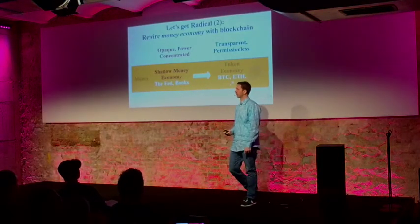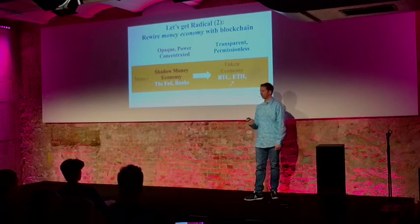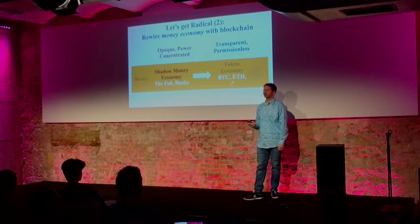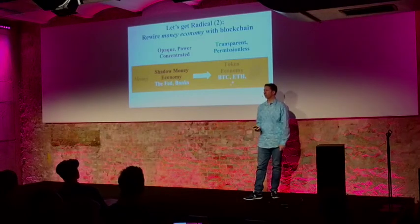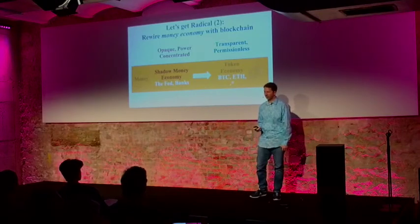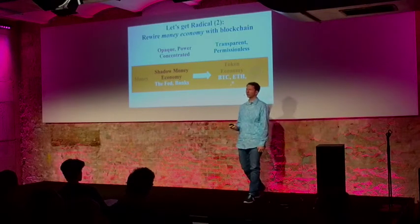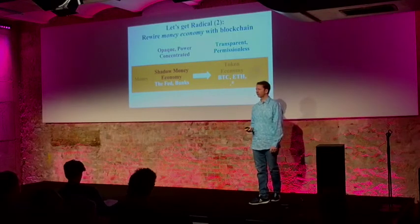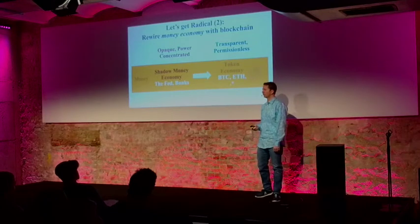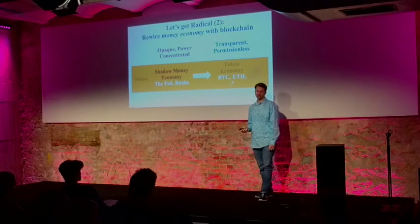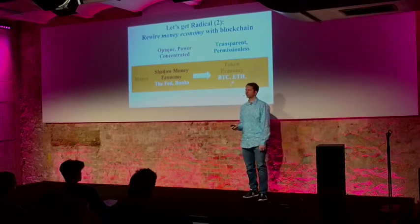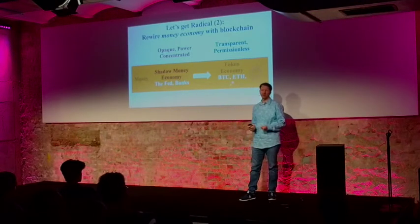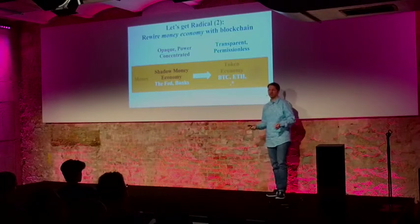Here's one cool example playing out over the last ten years. It was sparked in 2008 with the financial crisis — building up for years and years — really this shadow money economy where you had the Fed, the banks, and people creating policies that prey on the weak. That caused the meltdown. Right on the heels of that, what emerged was Bitcoin, and Bitcoin sparked what has now become known as the token economy, which is really a transparent, permissionless money economy. It started with Bitcoin, moved on to Ethereum and the decentralized financial things we see today — DeFi. It's really a radical money economy, which is quite exciting.